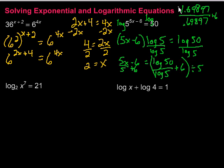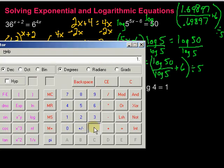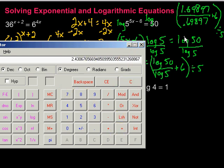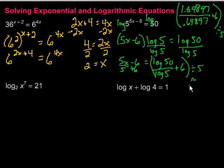Then I need to add 6 and divide by 5. So I take 1.69897 divided by 0.69897, then add 6, then divide by 5. We end up with approximately 1.686 — so x is approximately 1.686, rounding to the thousandths place.